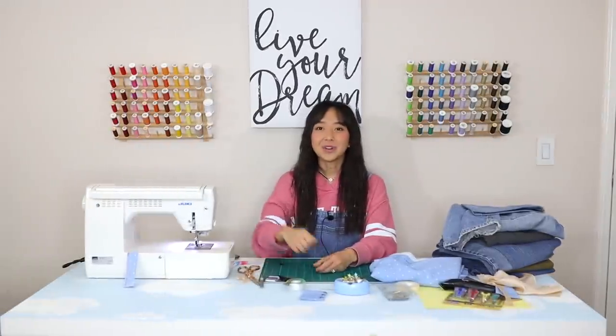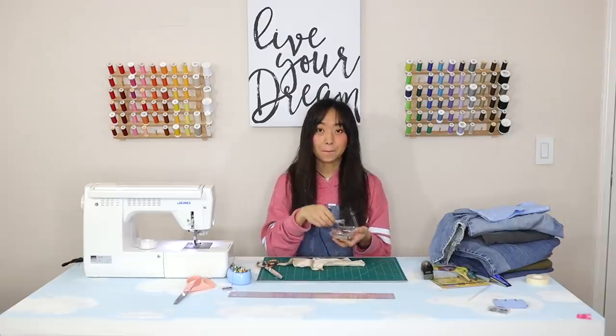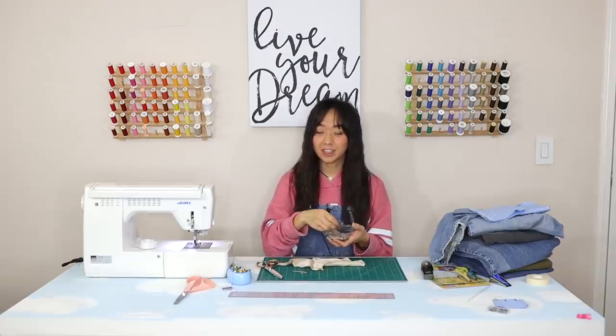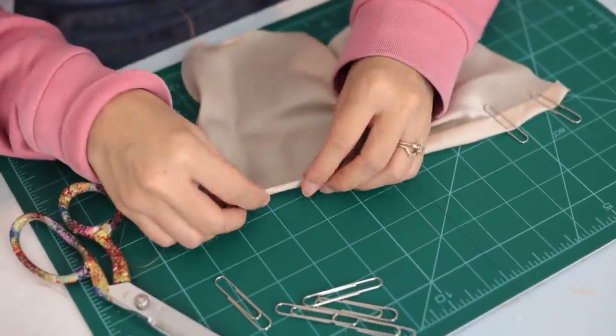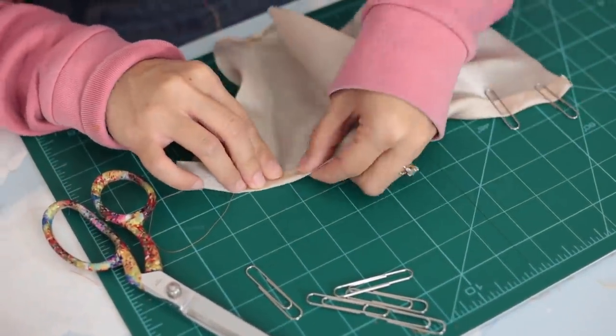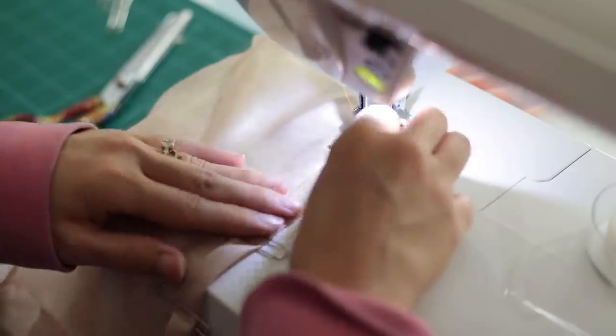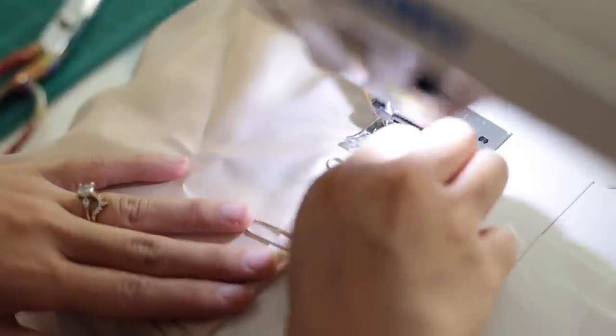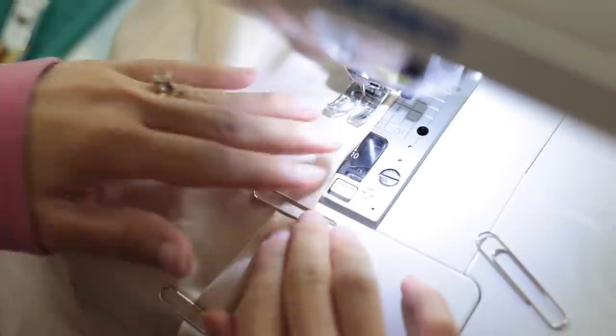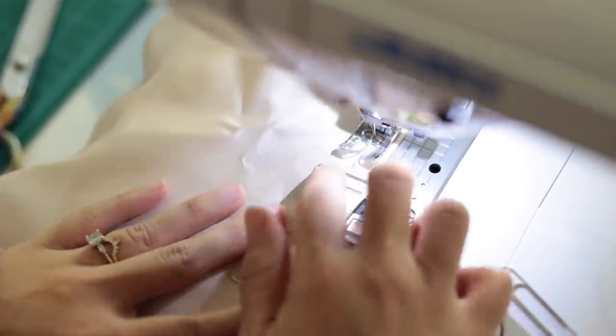Sewing trick number four: This next hack is to use paper clips to hold your fabric together while you sew. This one seems really basic, but I thought it was useful because paper clips are inexpensive and you might already own some at home. What I thought was cool about using paper clips is that you can slide it while you sew, which means you probably don't need to use that many.